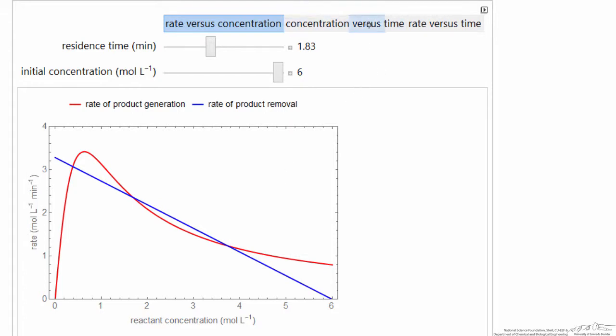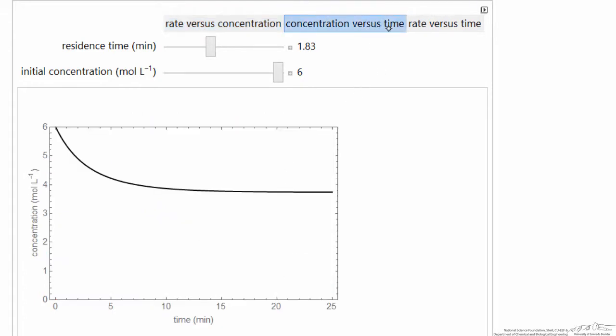And we select concentration versus time. So what this means is we start and solve the unsteady state equations. We start with a concentration, in this case 6, let's change it to 5. We still approach the same steady state. And as we keep lowering, there's a point where now we approach the other steady state, in this case almost complete conversion, because the rate of reaction is high enough.